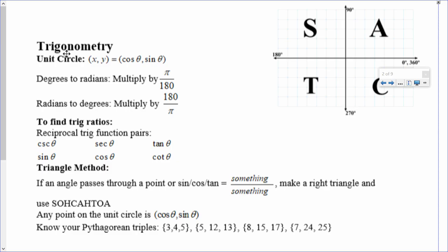Any point on the unit circle is cosine of theta comma sine theta. That's what your ASTC is based on. Let's start with the ASTC. In quadrant 1, they're all positive. In quadrant 2, only sine is positive, which makes tangent and cosine negative.